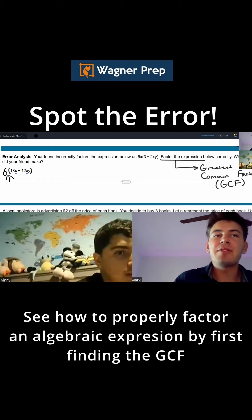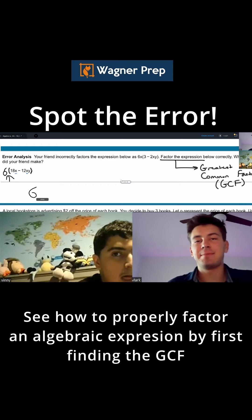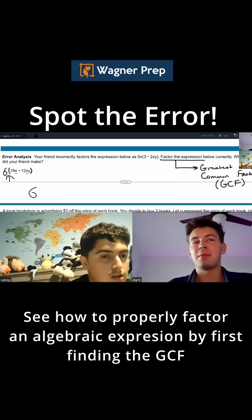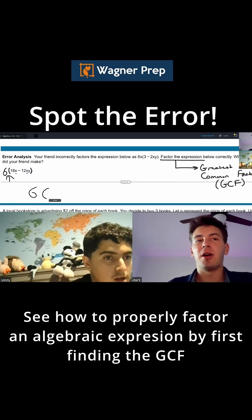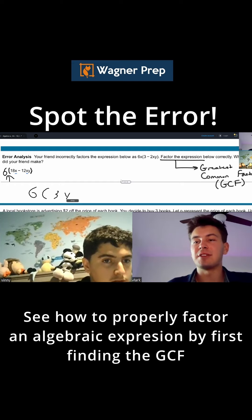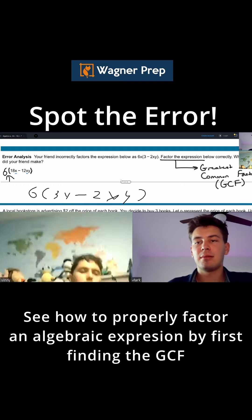There's an x in both of these things. So you said correctly that part of your greatest common factor will be 6. But what's the other part? What other variable are we going to put as our greatest common factor?